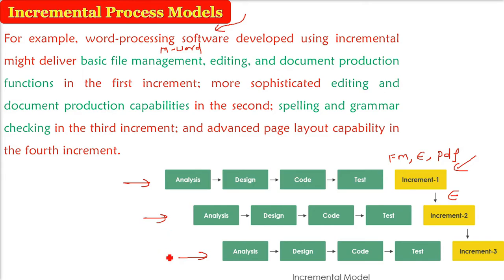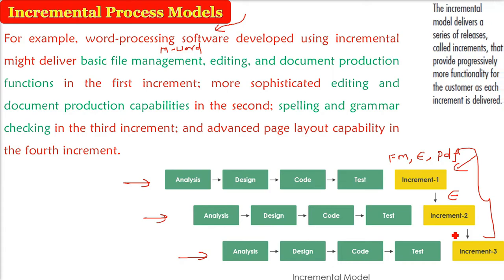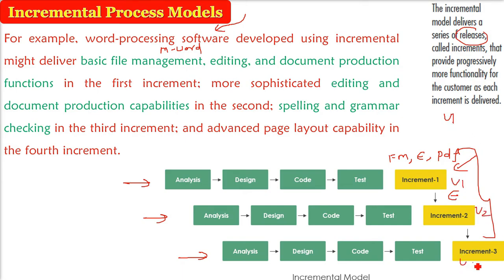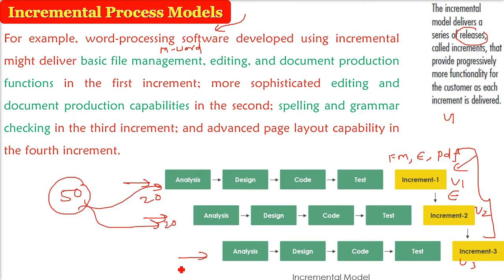This is the incremental process model, where we combine the linear and parallel process flows, and every increment will have something for the user. The incremental model delivers releases — version one, version two, version three — also called increments — that add functionality. For example, if there were 50 functionalities, you first give 20, get feedback, delete some, add more — delivering 20, 20, 20, 10 — giving the customer different releases in increments.